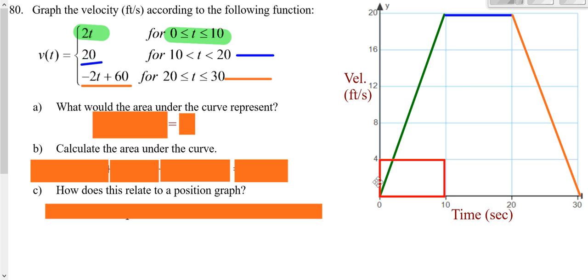The vertical axis has feet per second, the horizontal has seconds. When you multiply feet per second times seconds, the seconds cancel, leaving you with feet. So the area under the curve represents distance measured in feet.